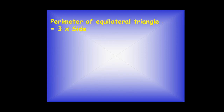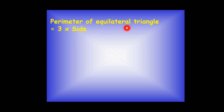Now let's talk about an equilateral triangle. The perimeter of an equilateral triangle is 3 multiplied by its side, because in an equilateral triangle all the sides are equal. So to find the perimeter we multiply its side by 3.